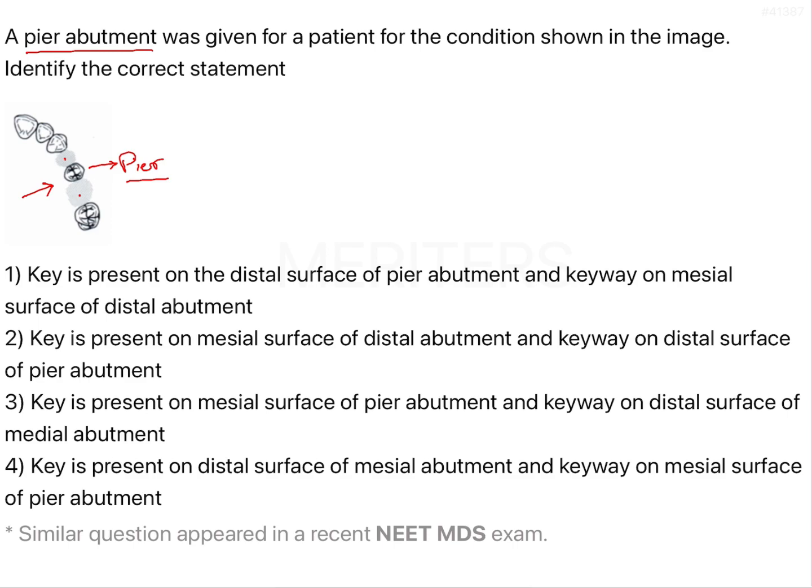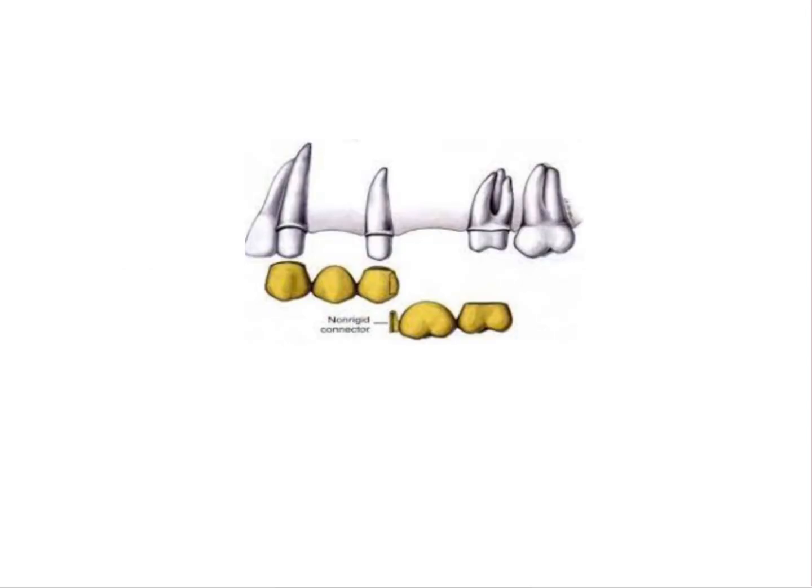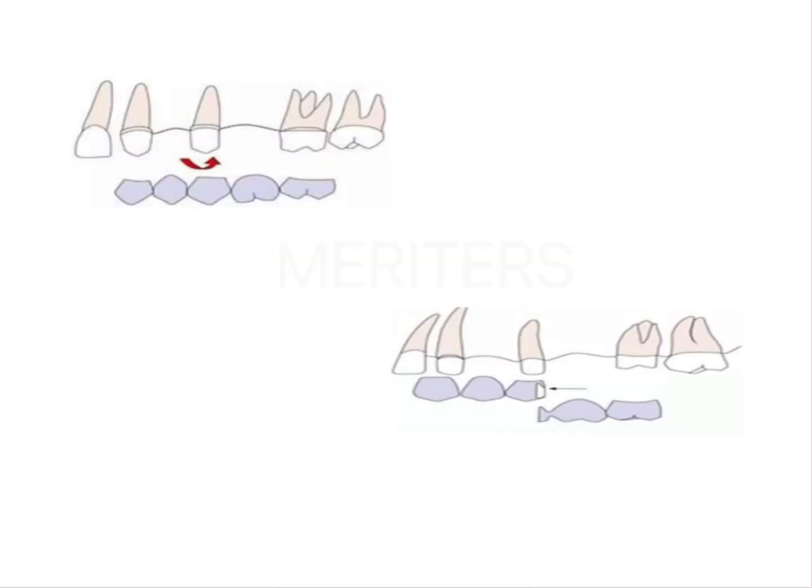Before we look at the options, let us understand what problems we face with the pier abutment. Now if you try restoring your two edentulous spaces next to your pier abutment with a single five unit FPD, what will happen is under occlusal stresses there might be some forces acting on your pier abutment which will make it act as a fulcrum.